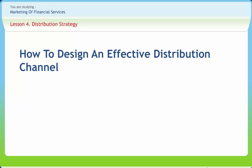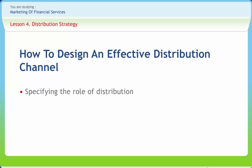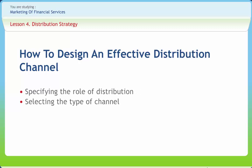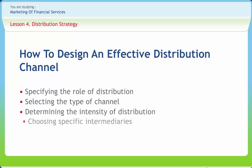Now let's study how to design an effective distribution channel. Four decisions are to be taken: specifying the role of distribution, selecting the type of channel, determining the intensity of distribution, and choosing specific intermediaries.